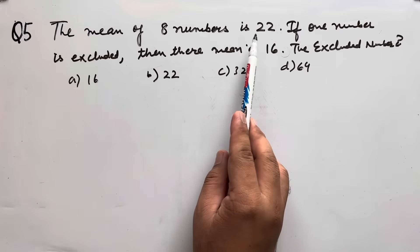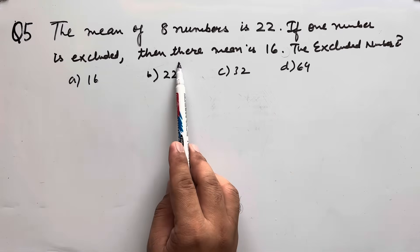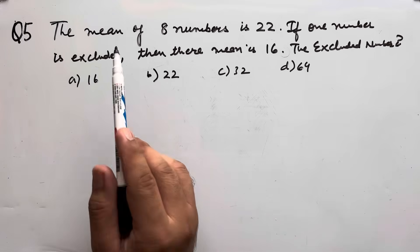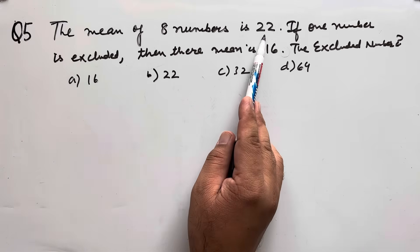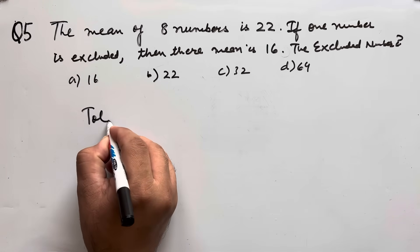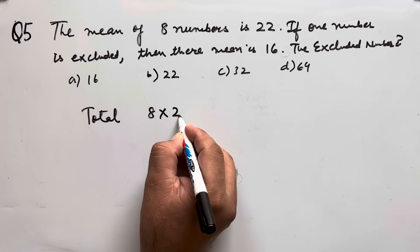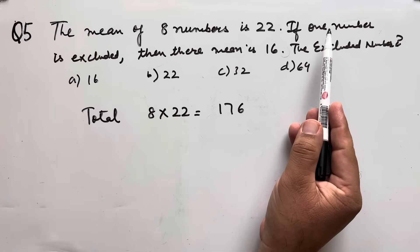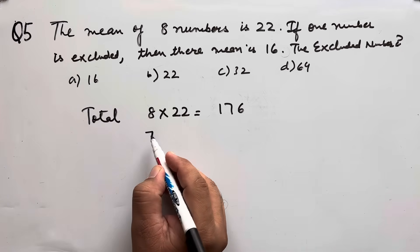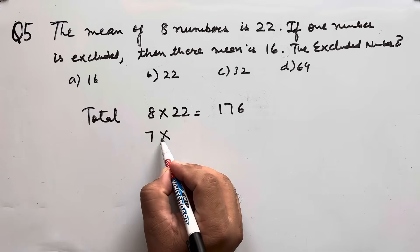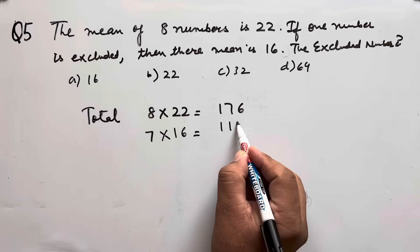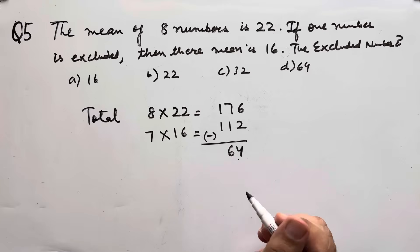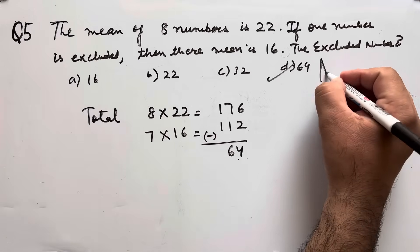Question number 5: the mean of 8 numbers is 22. If one number is excluded, the mean becomes 16. Find the excluded number. Total of 8 numbers = 8 × 22 = 176. After exclusion, 7 numbers remain with total = 7 × 16 = 112. The excluded number = 176 − 112 = 64. Option D is the correct answer.